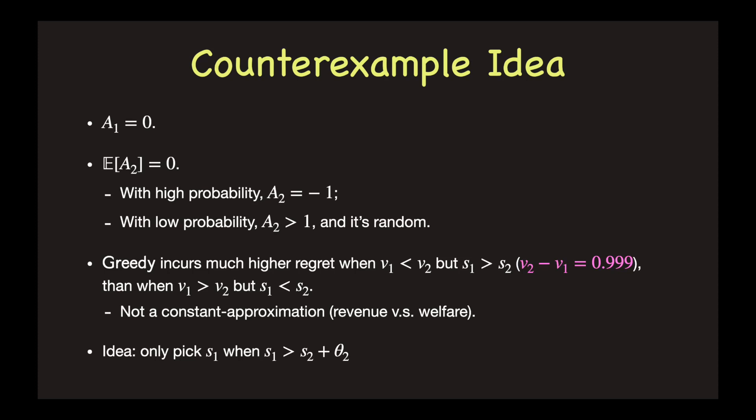However, only the first case can involve a large regret. For example, when v2 is higher than v1 by 0.999, the observed value s1 is larger than s2 with high probability. And therefore, Greedy is wrong with high probability. The other case where Greedy mistakenly picks v2 cannot produce a large regret.